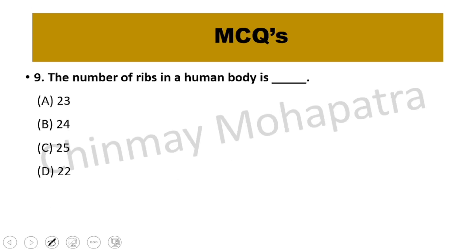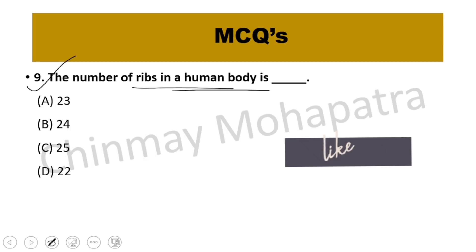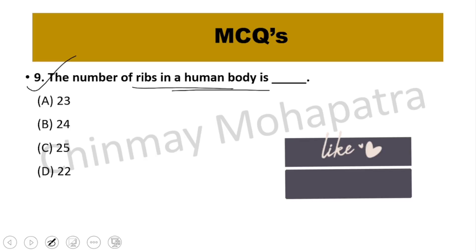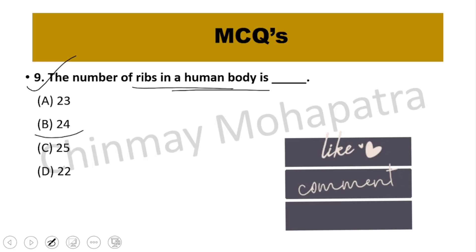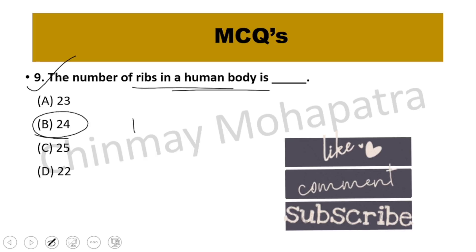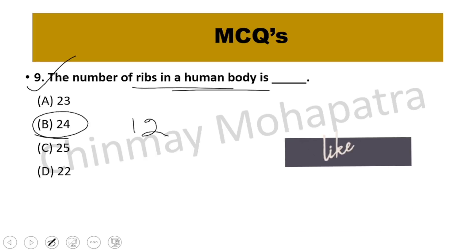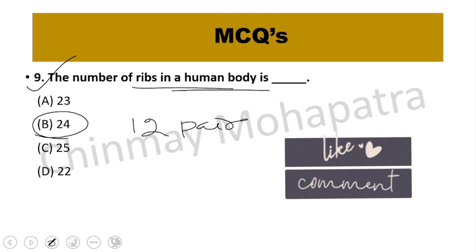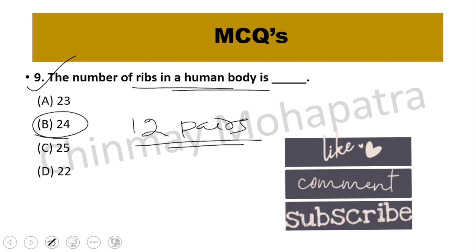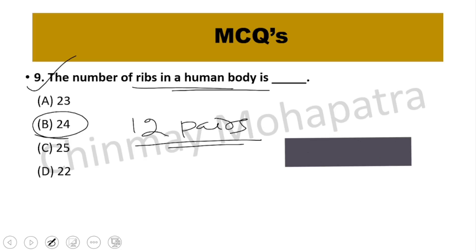Question number 9: What is the number of ribs in the human body? The answer is 12 pairs, which equals 24 ribs in total.